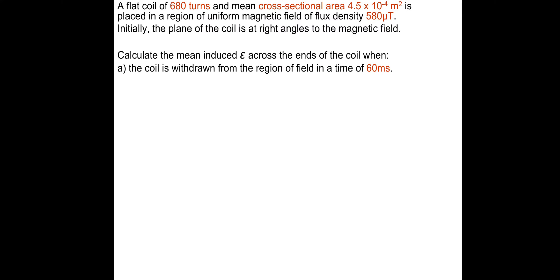So if you want to pause and have a go at this one, then I'll take you through the answer. A flat coil of 680 turns and mean cross-sectional area 4.5 times 10 to the minus 4 square meters is placed in a region of a uniform magnetic field of flux density 580 micro tesla. Initially, the plane of the coil is at right angles to the magnetic field. So calculate the mean induced EMF across the ends of the coil when: A) The coil is withdrawn from the region of field in a time of 60 milliseconds.